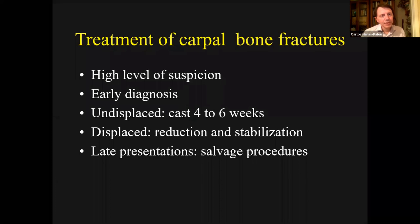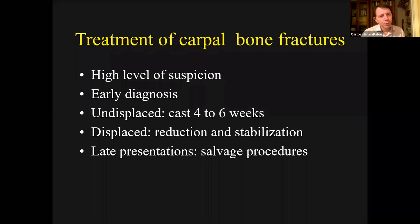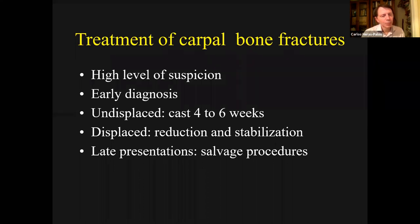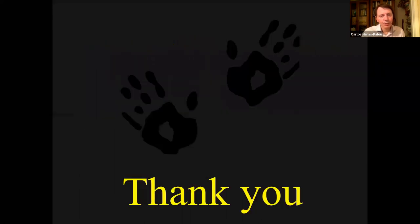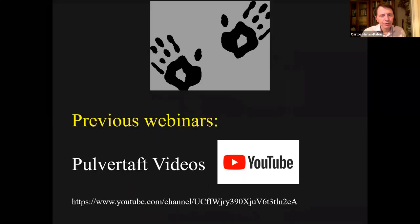In summary, carpal bone fractures are rare but not as rare as we think. You need a high level of suspicion and need to look for them. It's important to get an early diagnosis; otherwise you may get complications. If they are undisplaced, a cast for four to six weeks is more than enough. If they are displaced, most of them are intra-articular, so you need reduction and stabilization. Late presentations will need salvage procedures. Thank you very much for your attention — the previous talks relevant to this topic can be found on the YouTube portal videos.